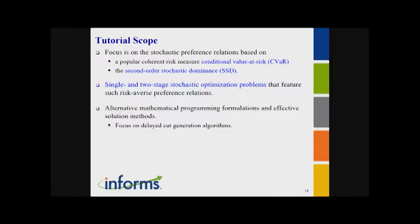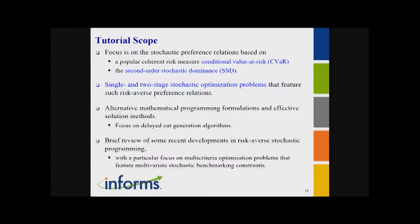Now I can outline the scope after this overview. I'm going to stick to one coherent risk measure — Conditional Value at Risk (CVaR) — and discuss one type of stochastic dominance. I picked these two because they are very related. I want to highlight the connection between them: we have all these papers on CVaR and SSD, but if you can see the connection, we keep doing the same thing. I will first discuss this relation, then incorporate it into single-stage and two-stage optimization problems, present mathematical programming formulations, and discuss effective solution methods.